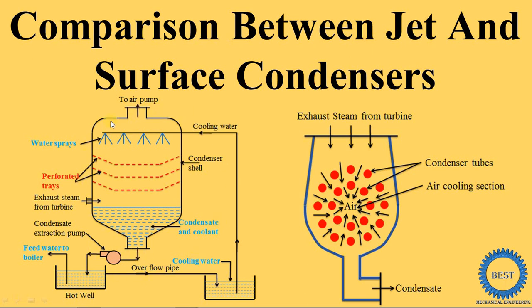In this image, you can see the jet condenser. In a jet condenser, the exhaust steam from the turbine and the cooling water directly come into contact — they are mixed with each other. In a surface condenser, as shown in this image, the exhaust steam from the turbine and the cooling water do not directly come into contact; it is called indirect contact.